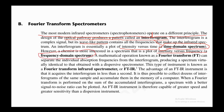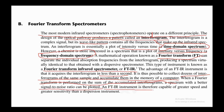A mathematical operation known as the Fourier transform can separate the individual absorption frequencies from the interferogram, producing a spectrum virtually identical to that obtained with a dispersive spectrometer. This type of instrument is known as a Fourier transform infrared spectrometer, or FTIR. The FTIR acquires the interferogram in less than a second; it is thus possible to collect dozens of interferograms of the same sample, accumulate them in computer memory, and after performing a Fourier transform on the sum, obtain a spectrum with a better signal-to-noise ratio. An FTIR is therefore capable of greater speed and greater sensitivity than a dispersive instrument.